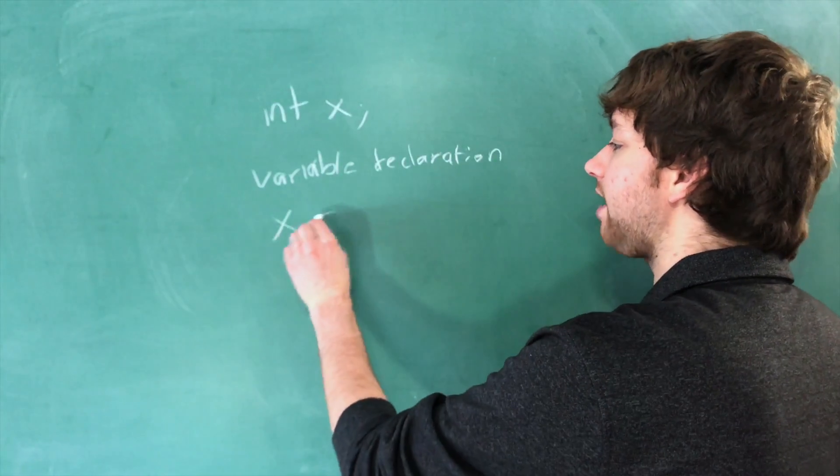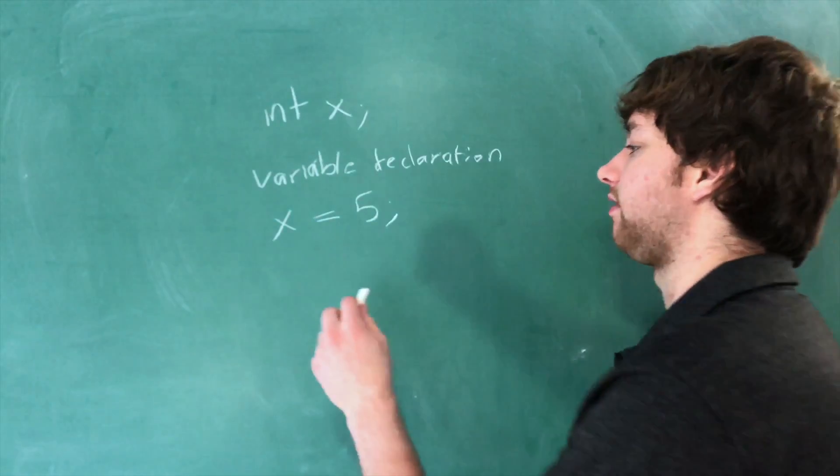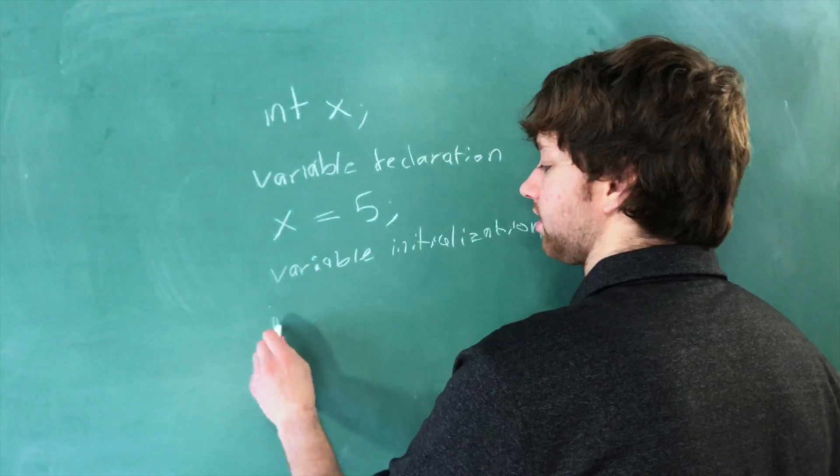When we do something like this after that, what is this called? This is called a variable initialization. And as a reminder, you can do this on one line, like so.